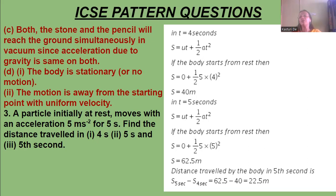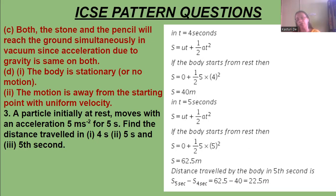The distance travelled in the 5th second is the distance in 5 seconds minus the distance in 4 seconds, that is 62.5 minus 40, which gives 22.5 meters.